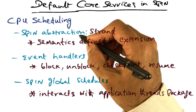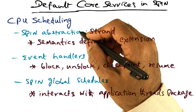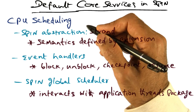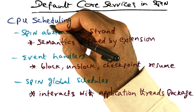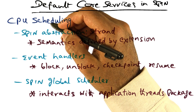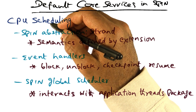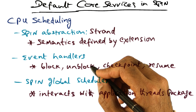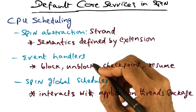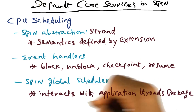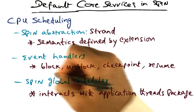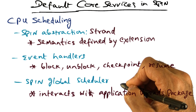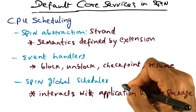Spin arbitrates another precious resource, which is another core service, namely the CPU. Spin only decides at a macro level the amount of time that is given to a particular extension. That is done through the Spin global scheduler.